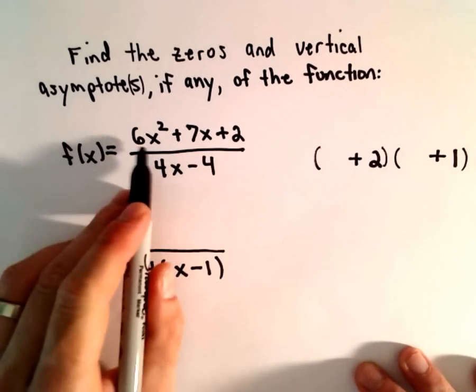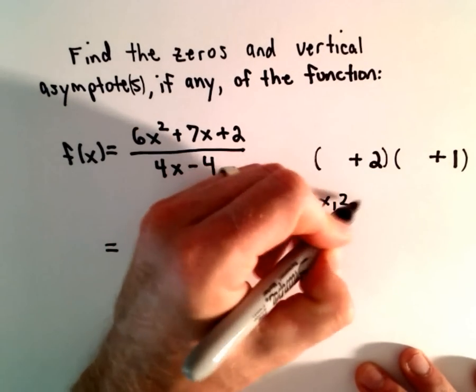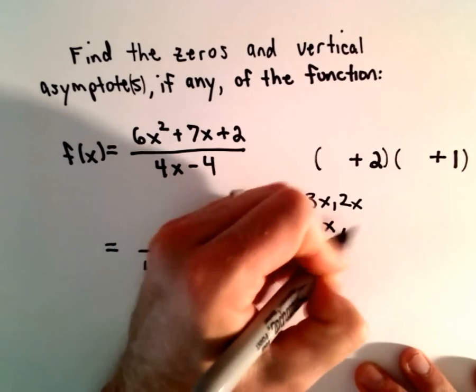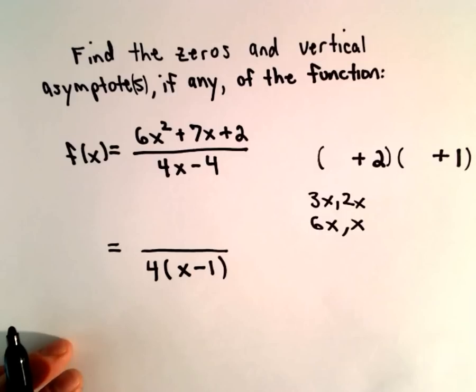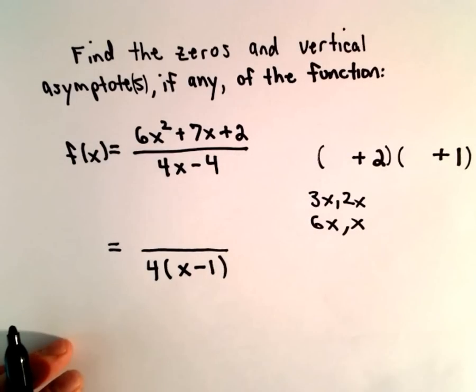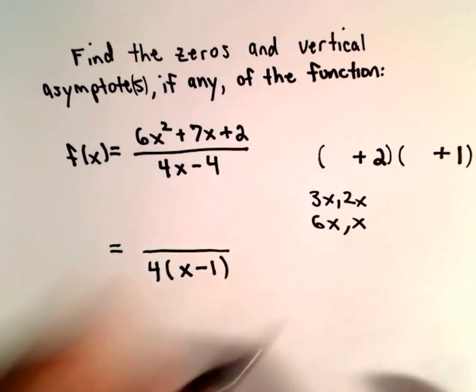But now I've got a choice. To get 6x², for example, I could use 3x and 2x, or I could use 6x and x. Then we have to distribute and things can be a little tricky here.